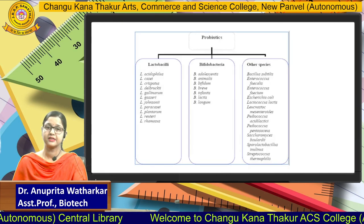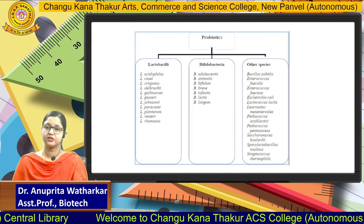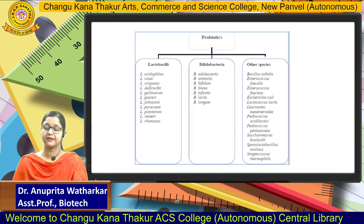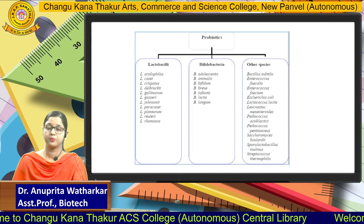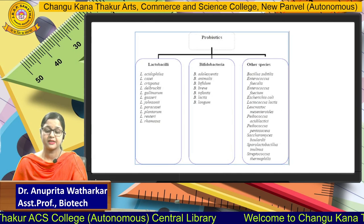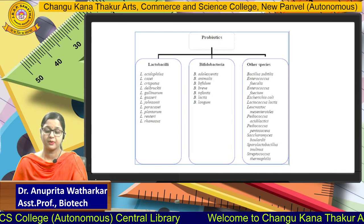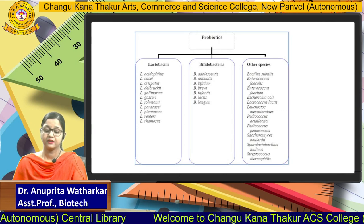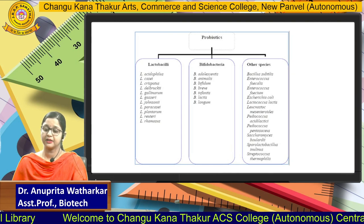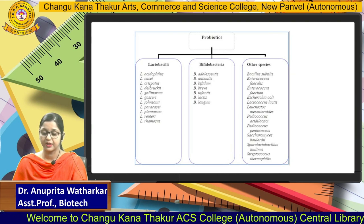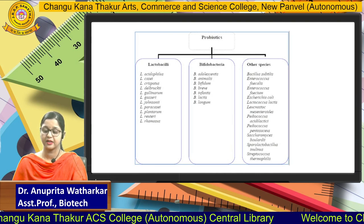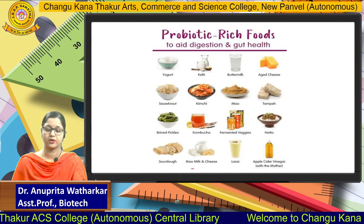Examples of probiotics include three genera: Lactobacilli, Bifidobacteria, and other species that play important roles as probiotics. Examples include Lactobacillus acidophilus, Lactobacillus casei, Bifidobacterium adolescentis, and Bifidobacterium animalis. From other species, Bacillus subtilis, E. coli, Lactobacillus lactis, and Lactococcus can also be used as probiotic microorganisms.